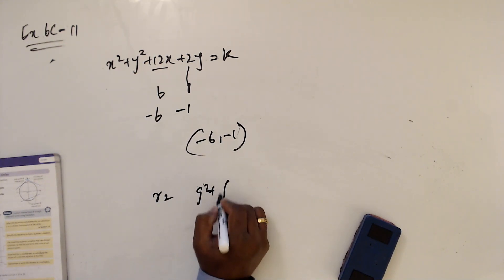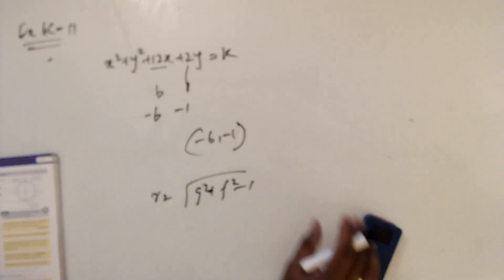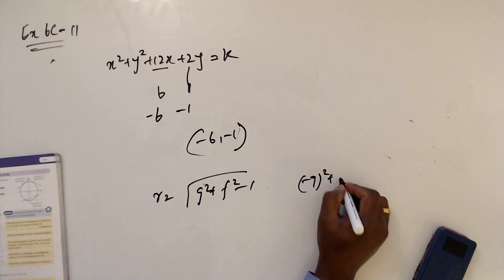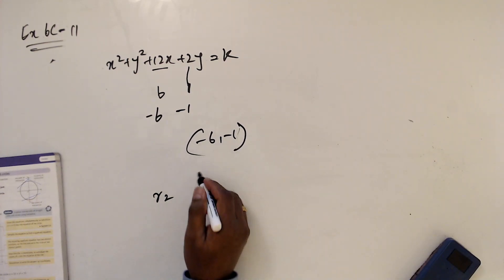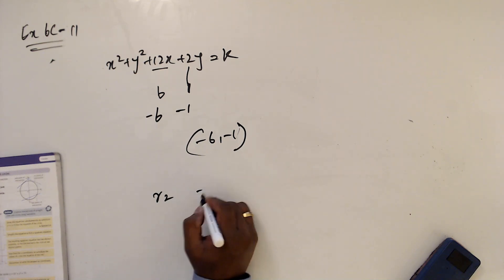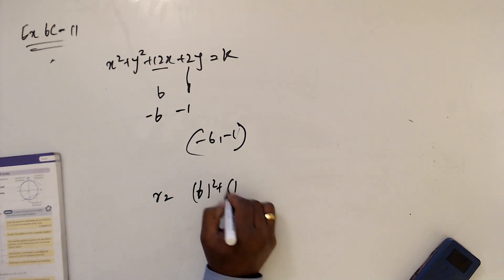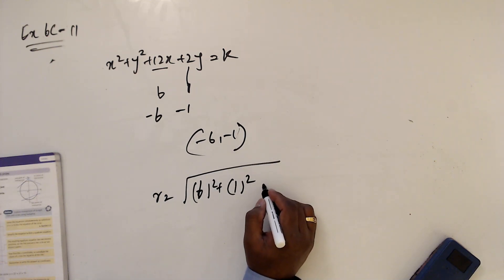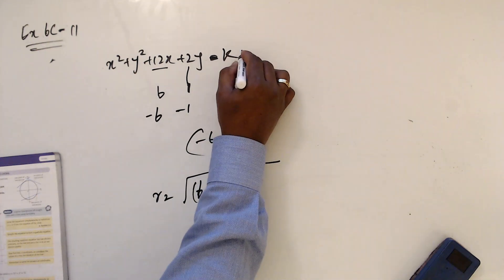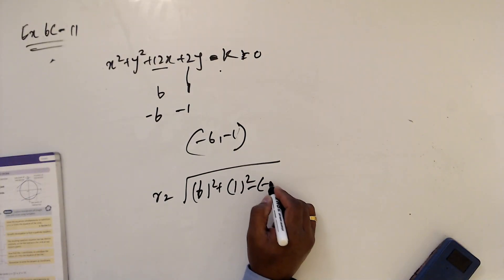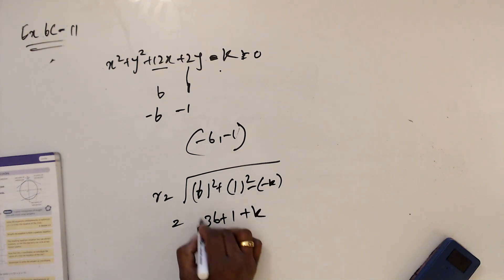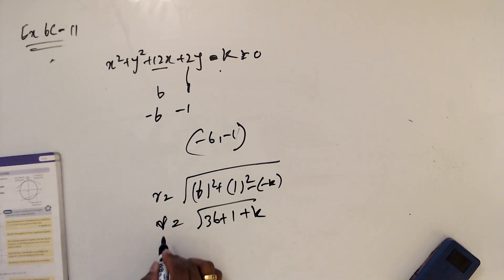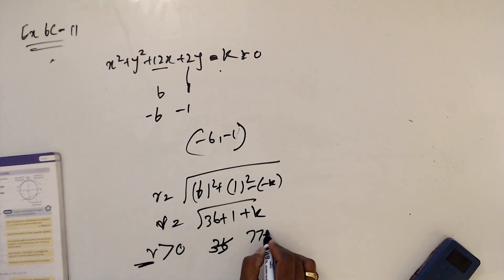Now for the radius: g squared plus f squared minus c. You can simply write 6 squared plus 1 squared minus k equals 0, so c equals k. That gives 36 plus 1 plus k. The radius r must be greater than 0 because r cannot be negative, so 37 plus k must be positive.